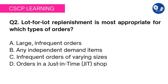Lot-for-lot replenishment is a set number of products ordered to cover the demand within a specific time frame, taking lead time into consideration. In other words, lot-for-lot replenishment means that raw material is procured as per the actual demand for a particular period — not a single unit is ordered extra.